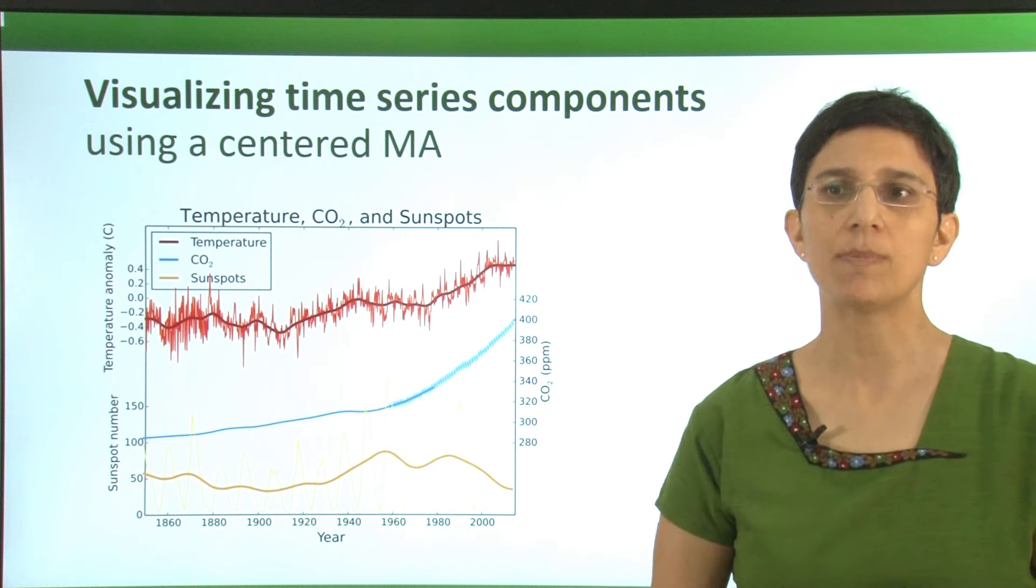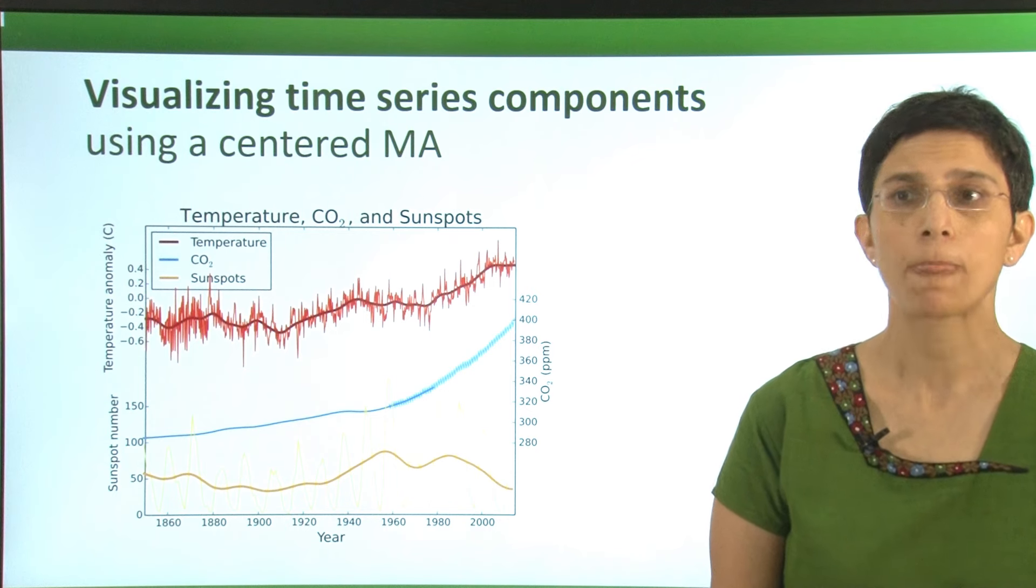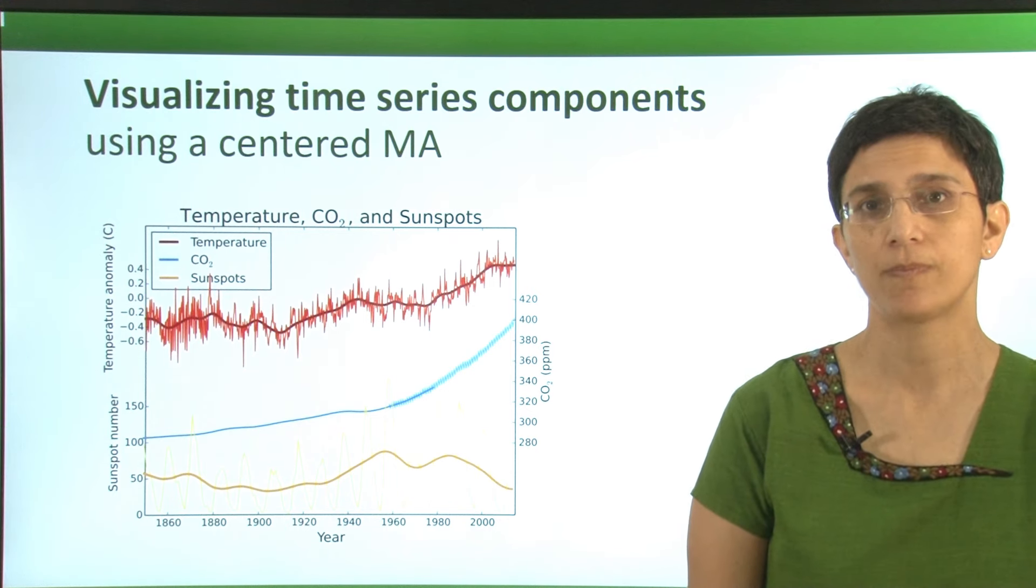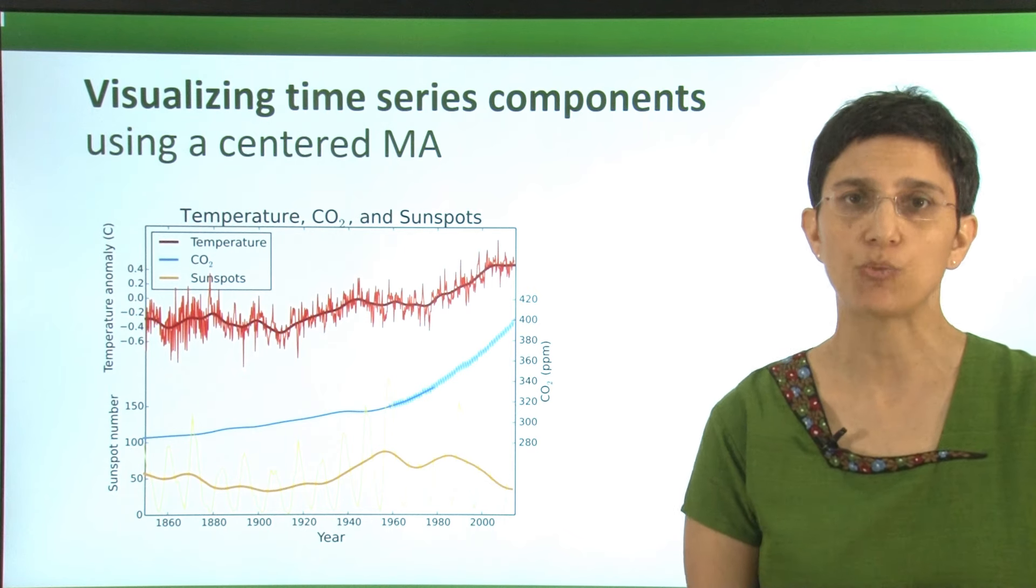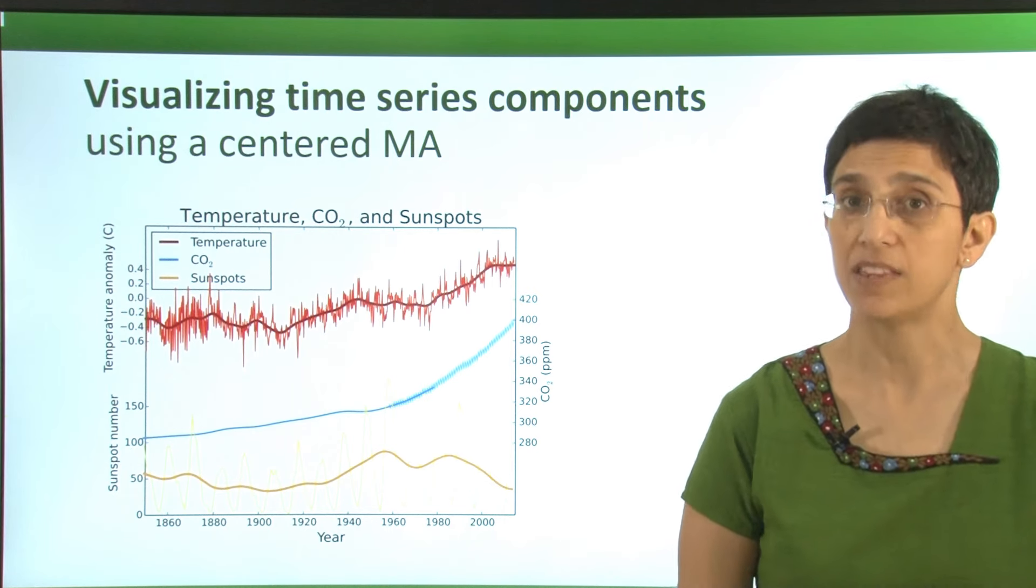We earlier talked about different components that a time series might include, such as trend and seasonality. We use data visualization to identify these patterns. A centered moving average will be used in what we call a moving average chart for exactly this type of purpose.